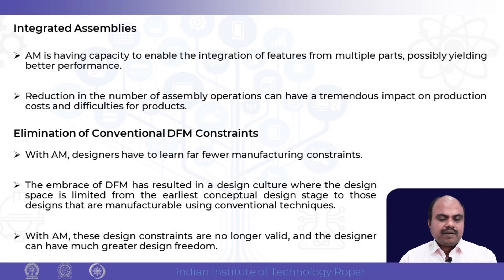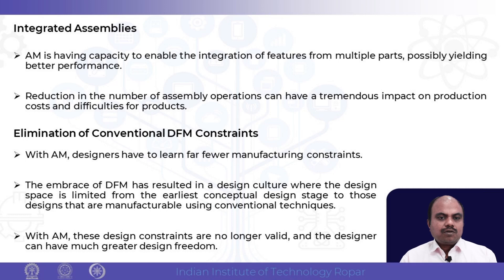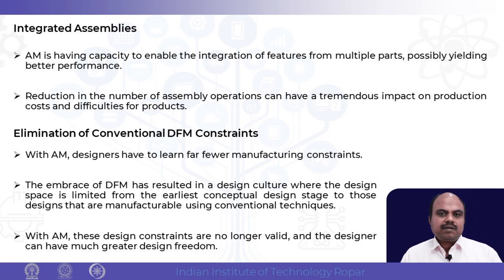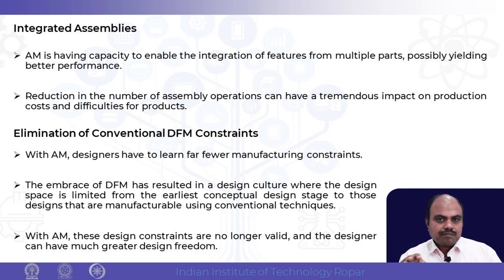In integrated assemblies, IT (additive) manufacturing enables the integration of features — whereas in traditional manufacturing you have to make different components and assemble them. This is going to reduce cost significantly. Of course, mass manufacturing using IT manufacturing is still challenging. Traditionally, design for manufacturing had a lot of constraints — for example, if you wanted to make a rectangular slot, the designer would have to think carefully how to make it. But in additive manufacturing, those constraints are not there. There are much fewer constraints.